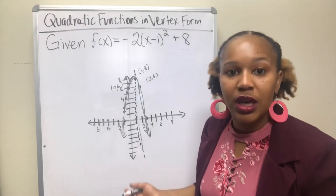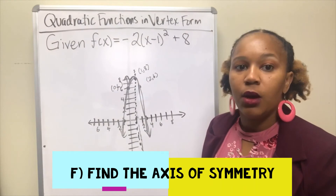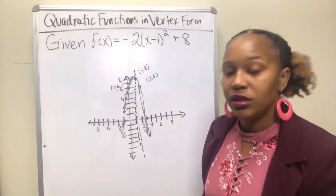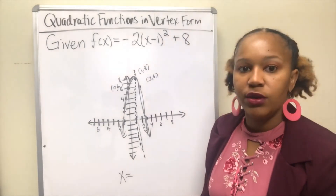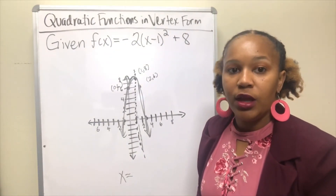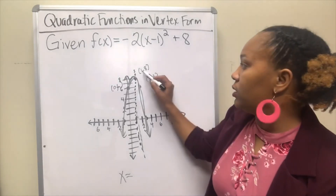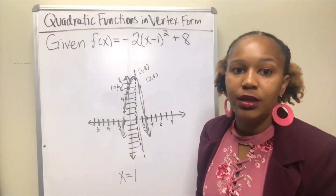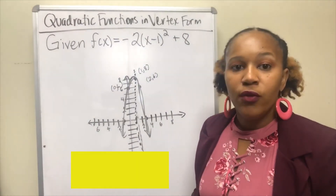For part f, we want to find the axis of symmetry. The axis of symmetry is an equation of the form x equals, because it is a vertical line passing through the x-value of the vertex. The vertex is 1 comma 8, so the x-value is 1. Therefore the axis of symmetry is the equation x equals 1.